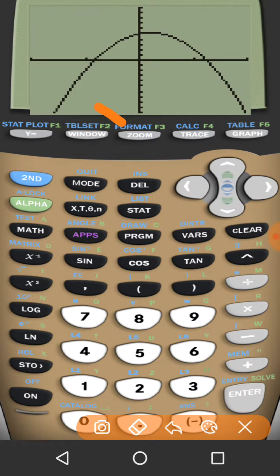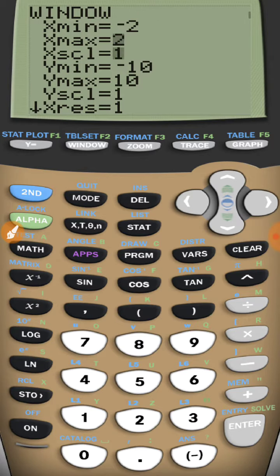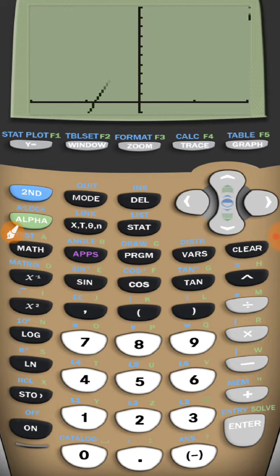What I'm going to do is press window again. This time I'm going to come down here to my Y minimum and change that to negative 1. Now when I press graph, that looks a lot better for a parabola.